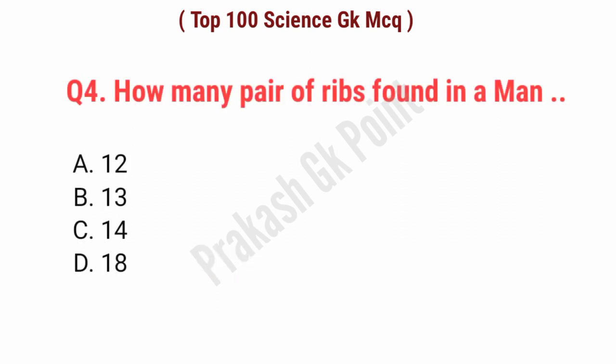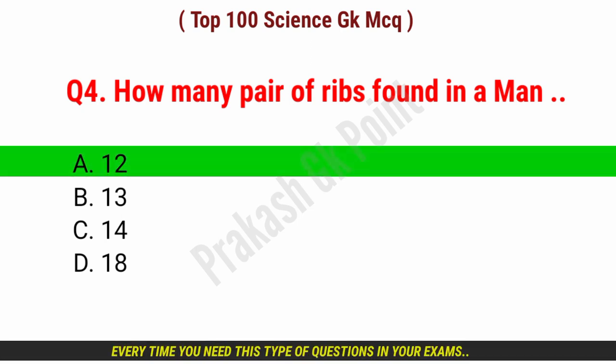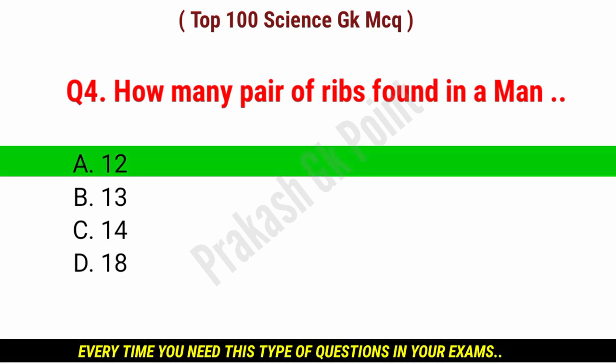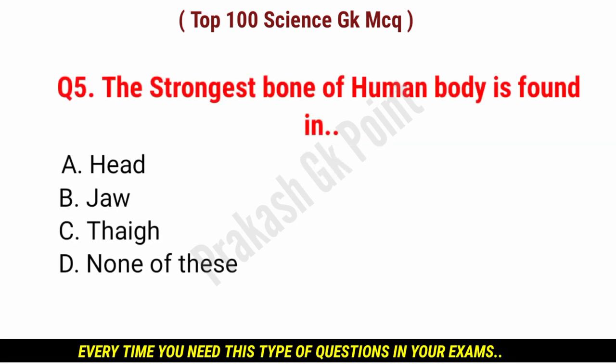How many pairs of ribs are found in a man? Answer: option A, 12 pairs of ribs.